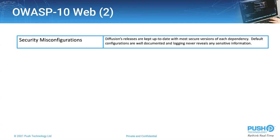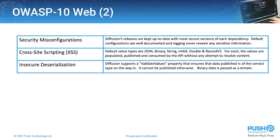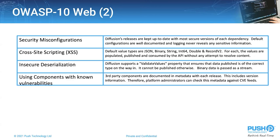Security misconfigurations: Diffusion keeps up to date with the most secure versions of all dependencies, which are well documented. Default configurations are also well documented and no sensitive information is logged to disk. Cross-site scripting: values are populated, published, and consumed by the API, but there is no attempt to resolve contents like a cross-site attack. Insecure deserialization: Diffusion supports a valid values property that ensures the data being published is of the correct type on the way in; otherwise it is not published. Using components with known vulnerabilities: third-party components are documented in metadata with each release, so admins can check against the latest common vulnerability and exploit feeds.